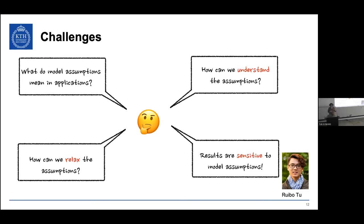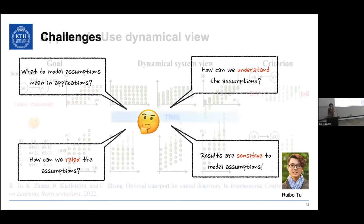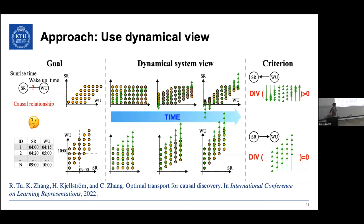Ruubo continued to think about how we can relax these assumptions — it's a pretty harsh assumption to assume linear dependencies and additive noise. How can we understand what certain assumptions mean? The results are really sensitive. I had an interesting discussion with Bob this morning where we talked about how the inferences we make about data are heavily dependent on what model we assume has generated the data. We have an ICLR paper this year about what we just presented on this.